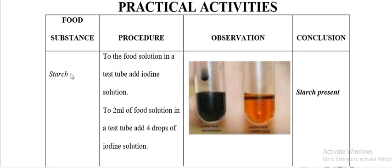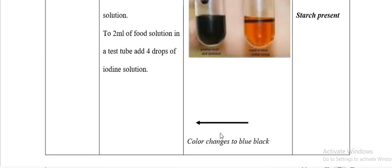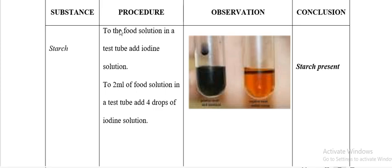We start with starch. To test for starch, the procedure is to add iodine solution to the food solution in a test tube. Alternatively, add 4 drops of iodine solution to 2 ml of food solution in a test tube. The observation: when the colour changes to blue-black, the conclusion is starch present.